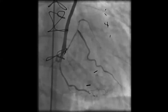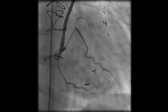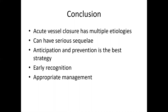With administration of pharmacotherapy including nitroglycerin, adenosine, and nicardipine, there was significant improvement in flow both in the graft and in the microvascular beds. In conclusion, acute vessel closure has multiple etiologies and we need to be aware of the differential diagnosis when this complication occurs. It can have serious sequelae and patients can deteriorate very quickly. The use of hemodynamic circulatory support can help stabilize patients until flow is restored. Anticipation and prevention is the best strategy. If it does happen, early recognition and diagnosis is very important, along with appropriate management. Thank you very much for your attention and for the opportunity.